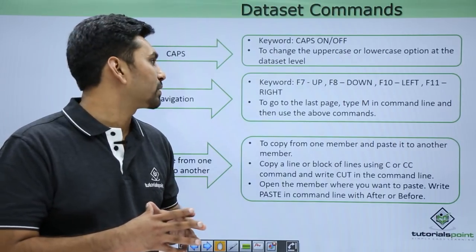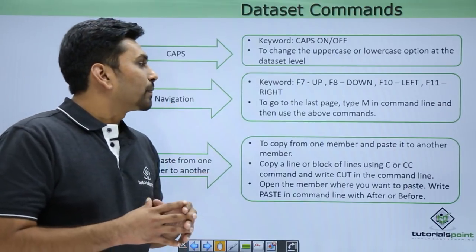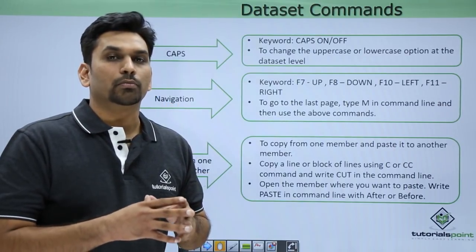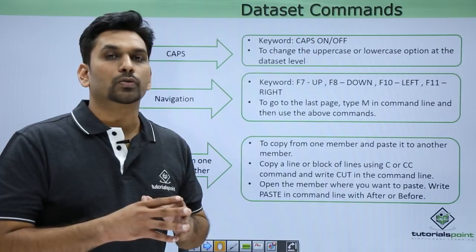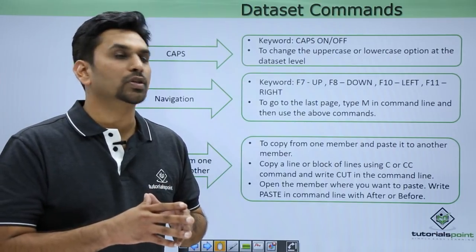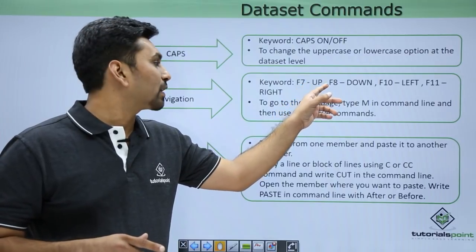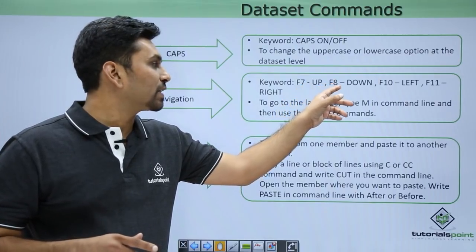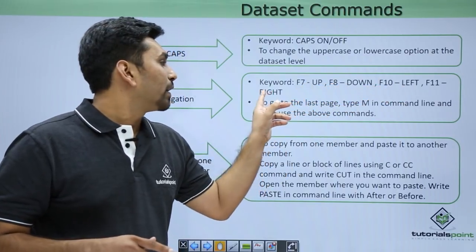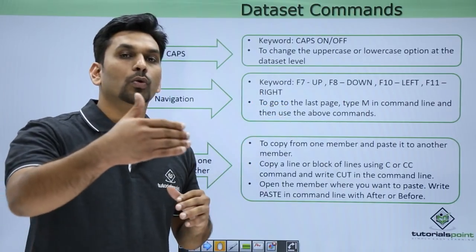Next is navigation, which is similar to the scroll option. Instead of scrolling the mouse, we use keyboard keys: F7 is for up, F8 is for down, F10 is for left, and F11 is for right.